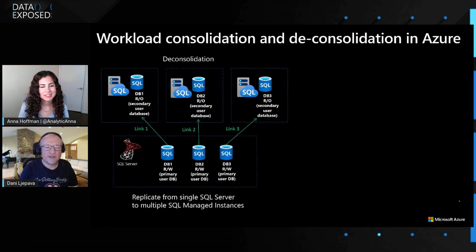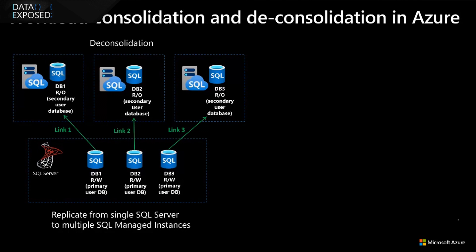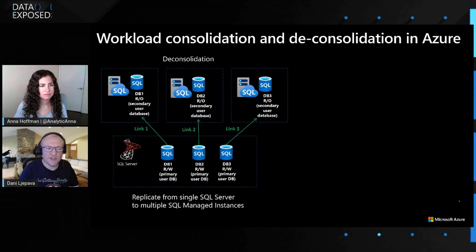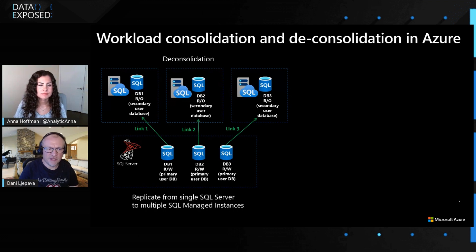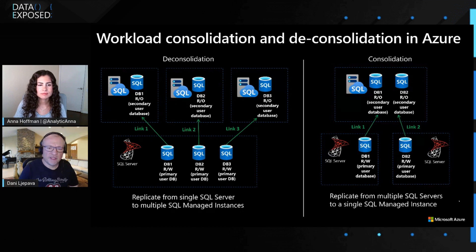Let me talk a bit more about different migration scenarios. You can consolidate and deconsolidate your workloads in the cloud. What I have shown here is a deconsolidation scenario — let's say you have a very large SQL Server 2016 that has been growing for years, lots of data, and it's super difficult to manage. Maybe you need a couple of Managed Instances geographically dispersed in different regions. Because the link is database-based, you can deconsolidate and replicate your data to multiple Managed Instances. On the other hand, if you have multiple SQL Servers with smaller workloads and want to consolidate on Managed Instance, you can also do that.